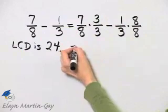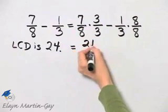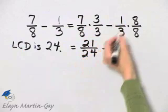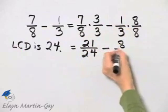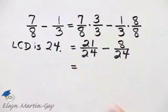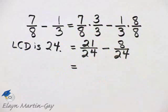Now let's see what's happening by multiplying. 7 times 3 is 21. 8 times 3 is 24. Minus 1 times 8 is 8. 3 times 8 is 24. Notice what I've accomplished. I'm subtracting, but now the denominators are the same.